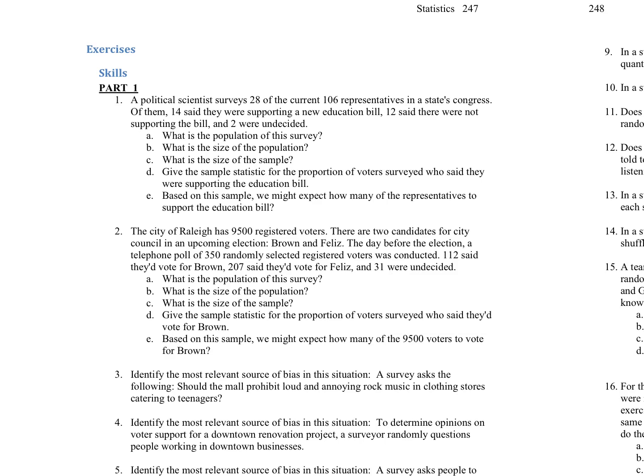Alright, we're looking at part one of our statistics practice. So for our first question, it says that a political scientist surveys 28 of the current 106 representatives in a state's Congress. Of them, 14 said they were supporting a new bill, and 12 said that they were not supporting the bill, and two were undecided. So what is the population of this survey?